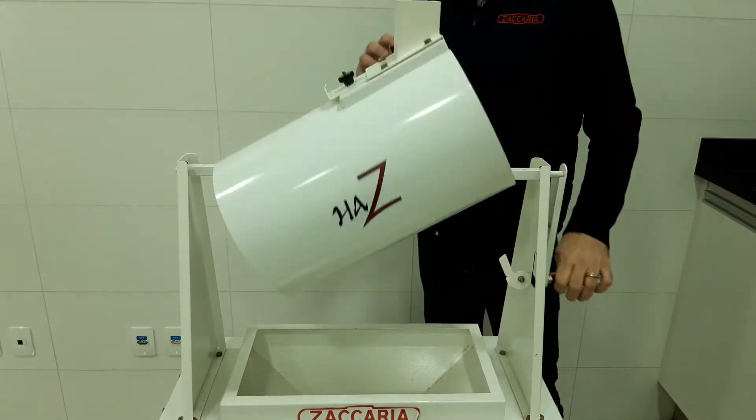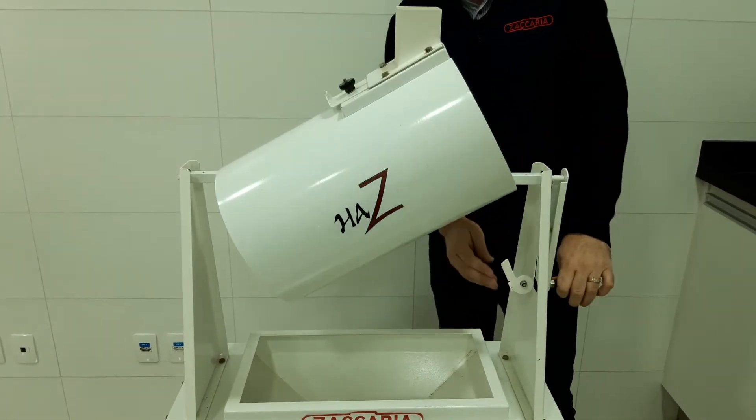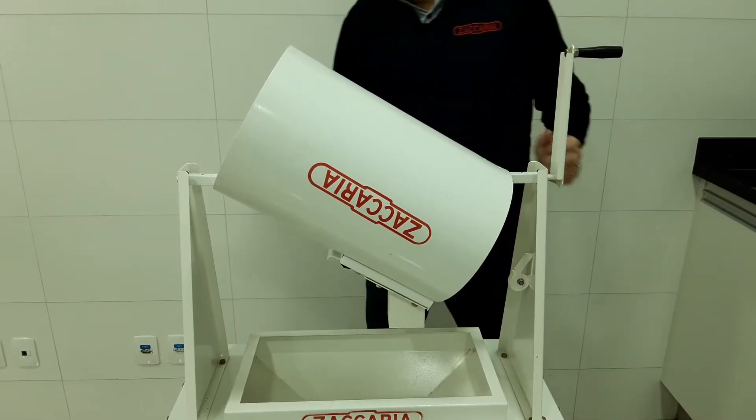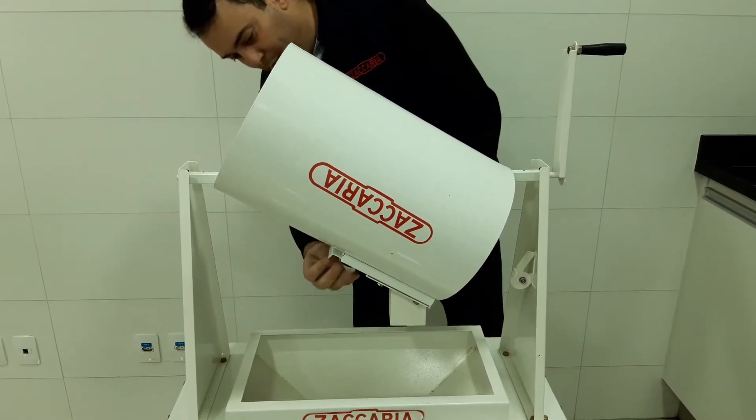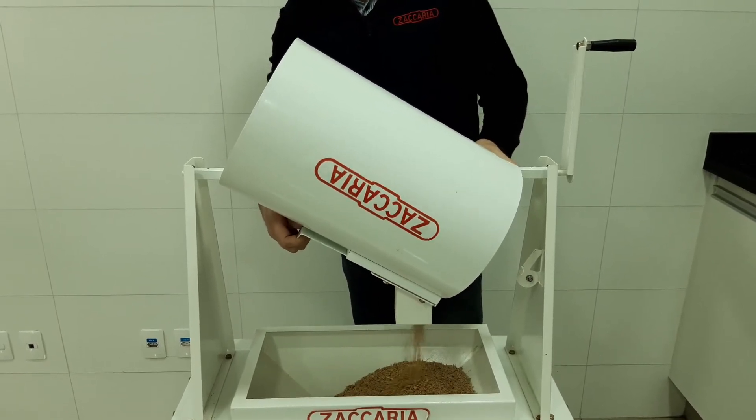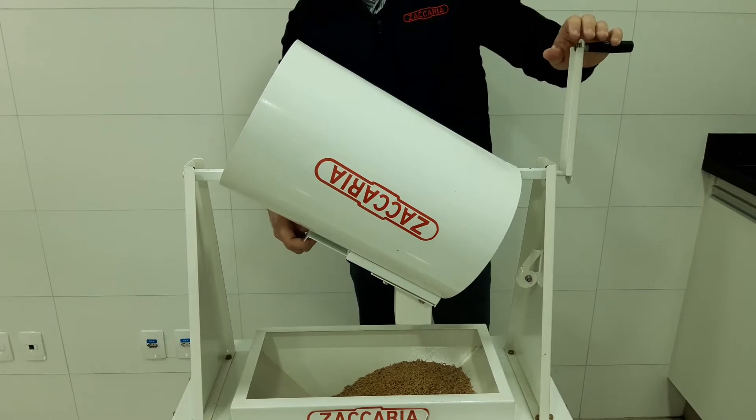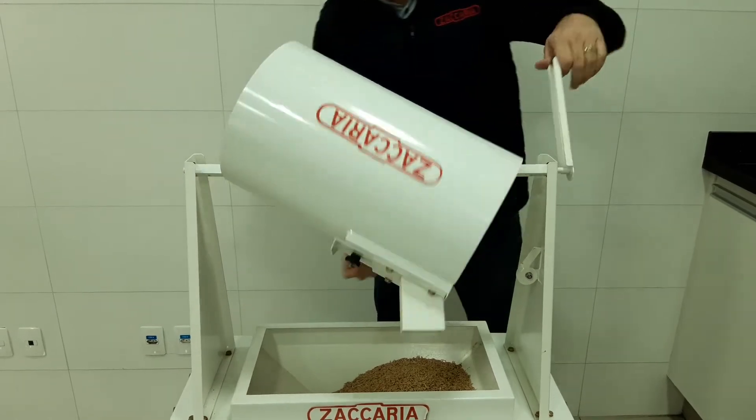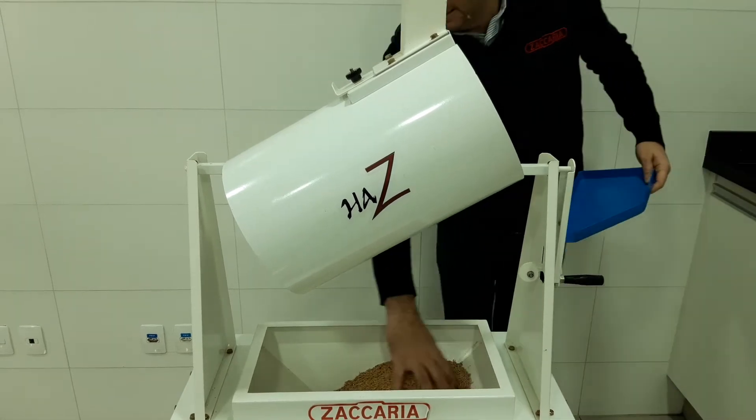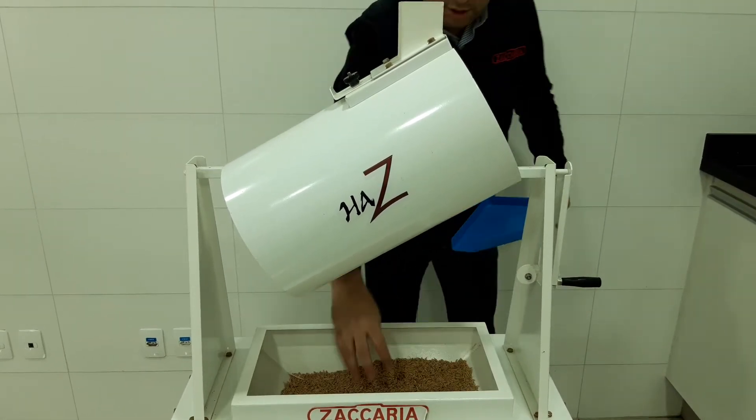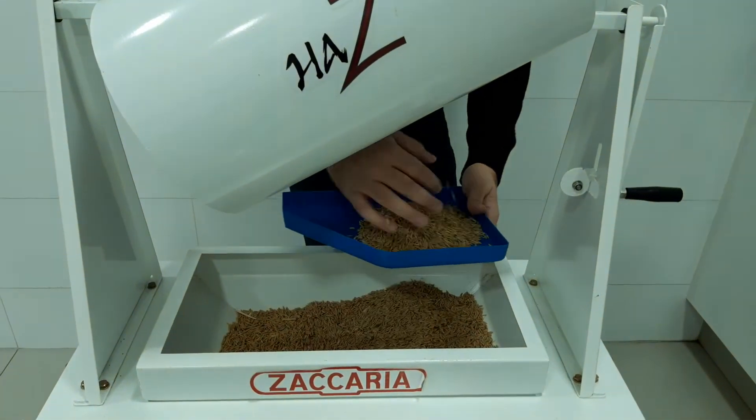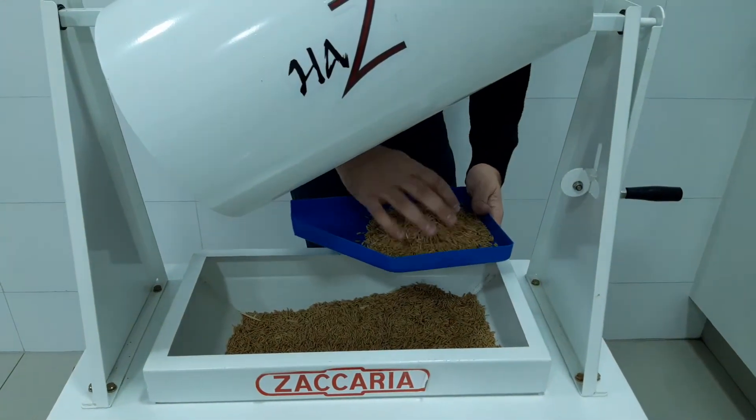So we use these procedures. Once we finish, we will unload from here. And then unload all paddy until here. And now this sample is homogenized. And then we can grab the sample from here to measure 100 grams of paddy.